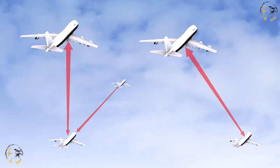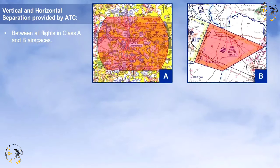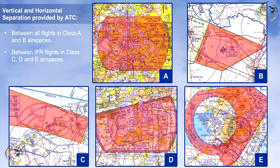To remind you again, vertical and horizontal separation is to be provided by ATC between all flights in Class A and B airspace, between IFR flights in Class C, D and E airspaces.